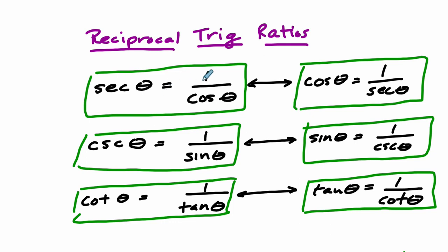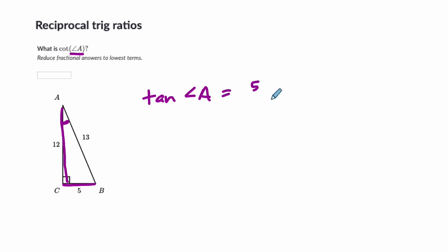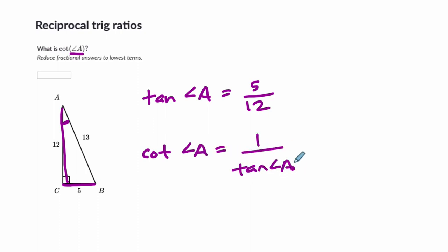Now, later on we'll draw pictures to make sense of where these definitions come from and how they all fit nicely together. So, how do we apply this to your problem? What I usually do is say they want to know the cotangent of angle A. Look where that angle is first. What is the tangent of angle A? That's the opposite over the adjacent, so it's 5 over 12. The cotangent of angle A is 1 over the tangent, which is 1 over 5 twelfths.